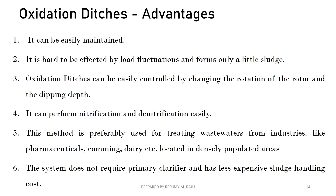Advantages of oxidation ditches: They can be easily maintained. They are not greatly affected by load fluctuations and produce only a little sludge. They can be easily controlled by changing the rotation speed of the rotor and the dipping depth. They can perform nitrification and denitrification easily. The method is preferably used for treating wastewaters from industries like pharmaceuticals, canning, dairy, etc., located in densely populated areas. The system does not require a primary clarifier and has less expensive sludge handling costs.